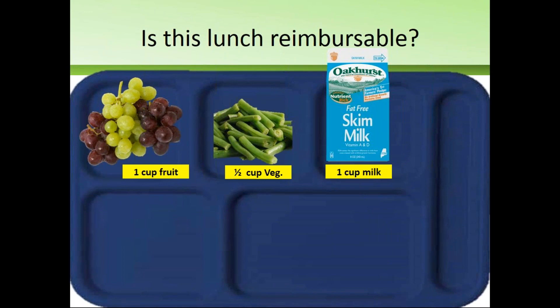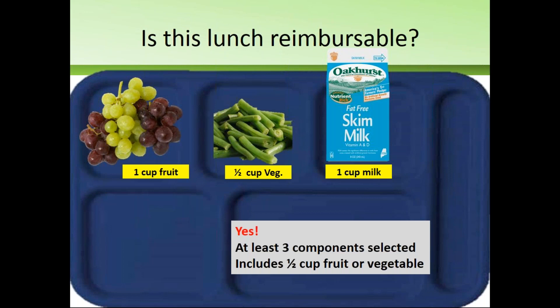The next student comes through the line. Their tray has fruit, vegetable, and milk — no entree. The answer is yes, this is reimbursable. While many of us would prefer to see an entree on the tray, regulations state that a reimbursable meal must have three different components selected. We have fruit, vegetable, and milk, and one must be at least a half cup fruit or vegetable. Therefore, this is a reimbursable meal.